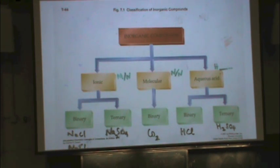First, you need to tell the difference between the ionic, molecular, and aqueous acid, because they each have different naming systems. For ionics, you recognize ionic because that has a metal in it. If there's a metal, it's ionic. You recognize a molecular because there's no metal. Simple as that.